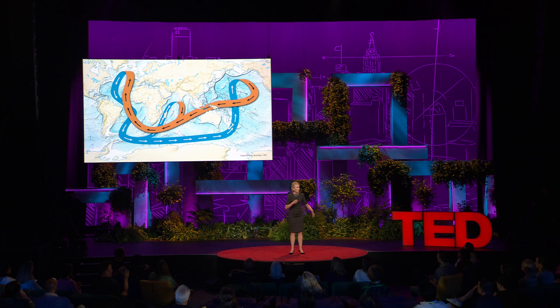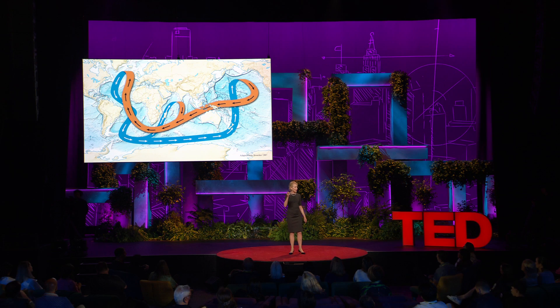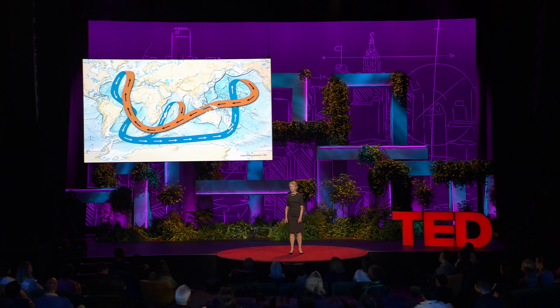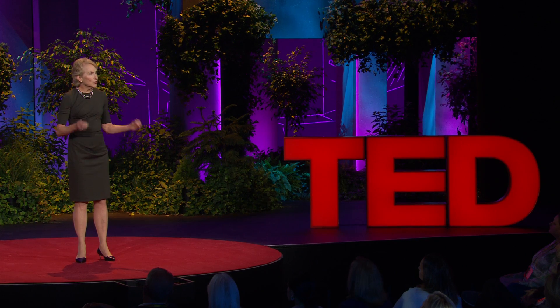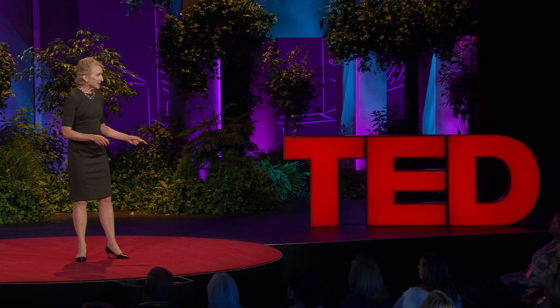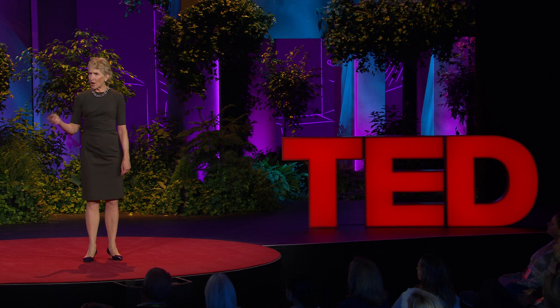Eventually, these waters upwell, meaning they return to the surface where they warm — so now the blue ribbon turns back to orange — and they return to where they started, completing the ocean overturning. This ocean overturning redistributes heat on our planet. In partnership with the atmospheric circulation, this fluid movement maintains a 30 degrees Celsius difference between the equator and the poles.